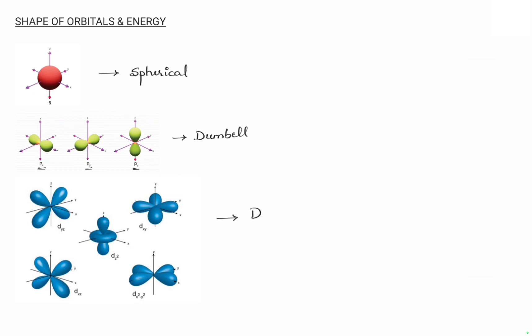D orbitals are double dumbbell shaped. We have five different d orbitals: dyz, dxy, dzx, dz², and dx²-y², which are oriented along their respective directions.